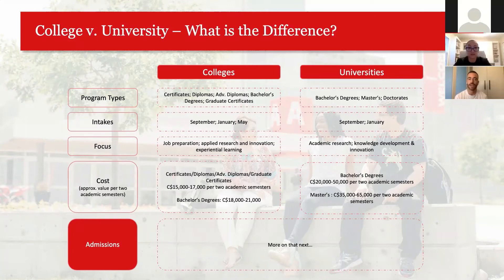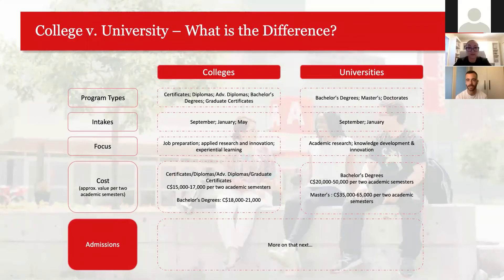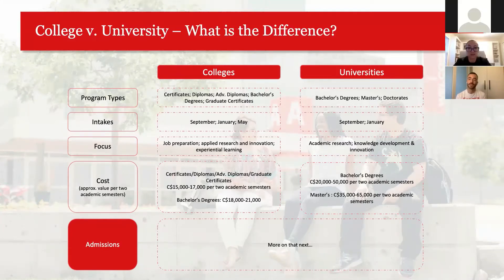For international students, colleges are a much more affordable option. A bachelor's degree at a college averages 18,000 to 21,000 Canadian dollars per two academic semesters, whereas a similar bachelor's — like a Bachelor of Commerce — at a university could cost 20,000 to 50,000 Canadian dollars per two semesters. Many students do a diploma at Seneca and then transfer credits into a university, making the two types of institutions quite complementary.